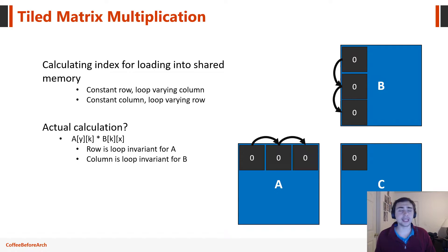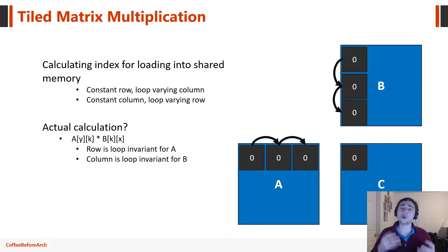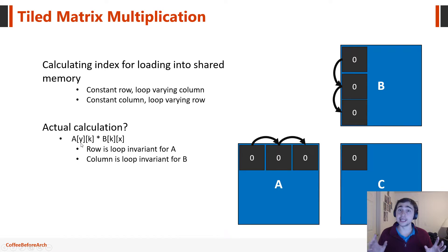An important thing to note: when loading from the A matrix, the row is constant — threads have a loop-invariant row and only the column changes. For the B matrix, because the tiles are moving downward along the y-axis, we have a constant column but a loop-varying row. Our actual calculation is simpler than the original matrix multiply — because we load everything into tiles, we index purely by the thread ID within the tile. The tile size equals the thread block size, so a tile in our case is 16 by 16 threads.